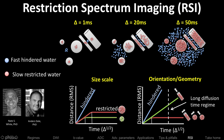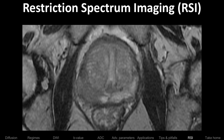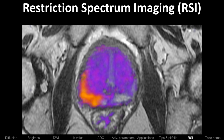If anyone would like to work with Anders, Nate, and David to explore whether RSI can differentiate restricted tumor from hindered liver, that could be very impactful. For the Navy folks here, strongly recommend collaborating with David to get RSI going. Here's a prostate — to me it looks like a gray blob on conventional DWI — but with RSI, even I can find the cancer. If nothing else, these images are really cool.